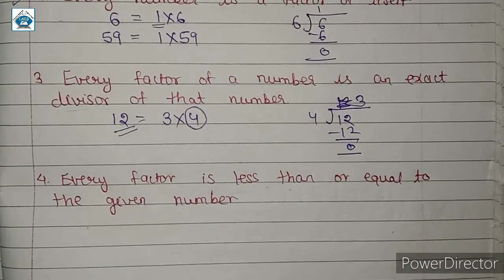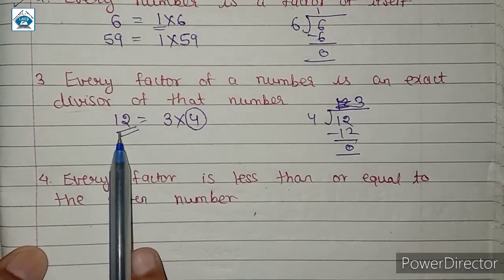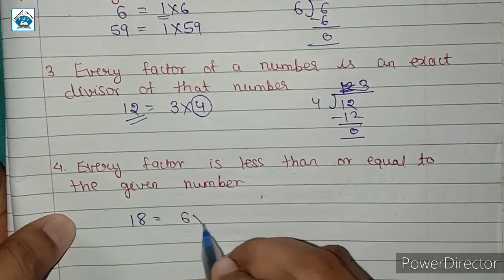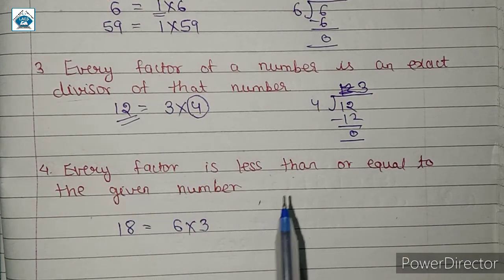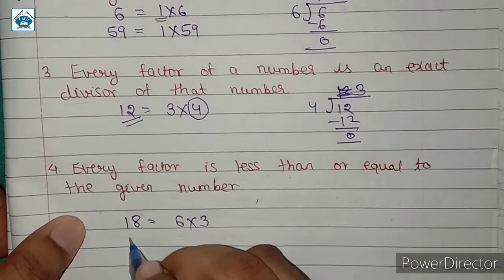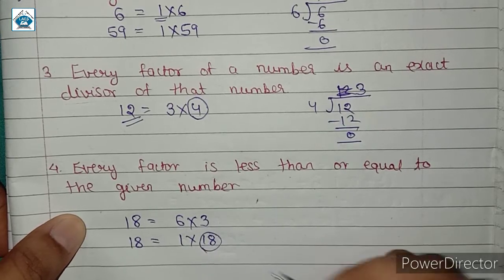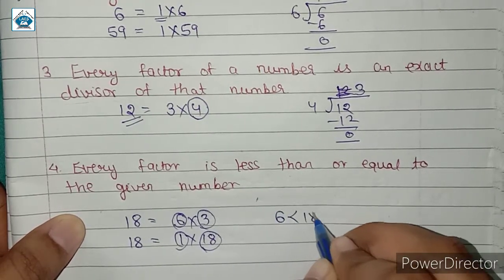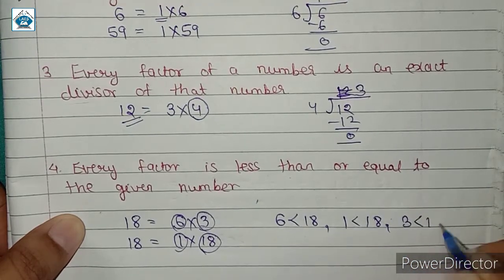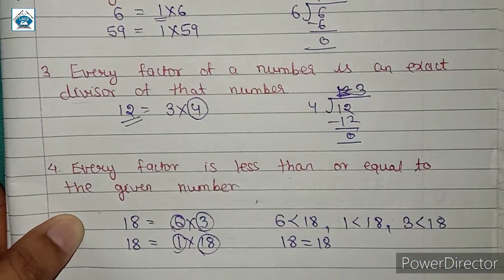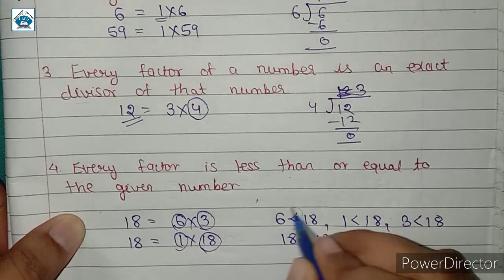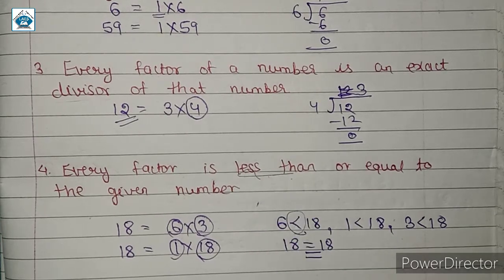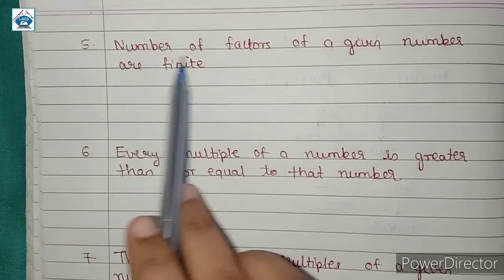Next: every factor is less than or equal to the given number. Consider 12 = 3 × 4, and 18 = 6 × 3, or 18 = 1 × 18. The factors of 18 include 1, 3, 6, and 18. Here 6 is less than 18, 1 is less than 18, 3 is also less than 18, and 18 is equal to 18. So every factor is less than or equal to the given number.